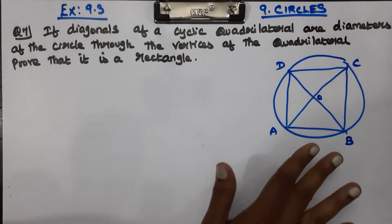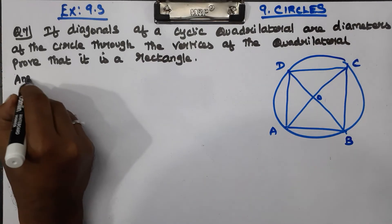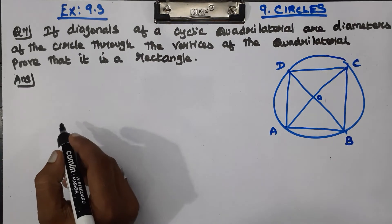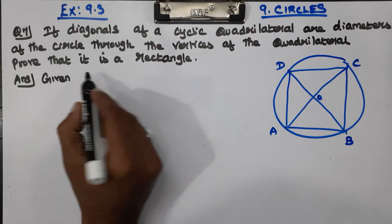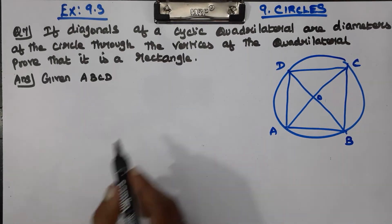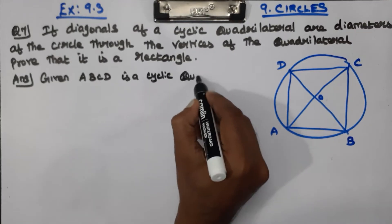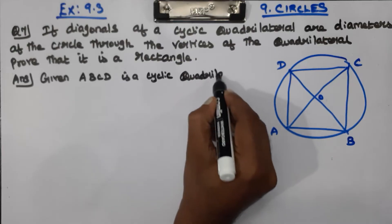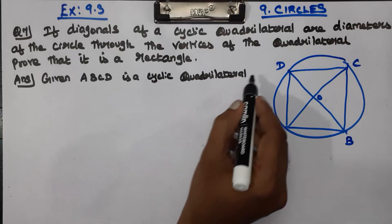Then we will open the rectangle and prove the answer. Now we can write the answer. What do we write? A, B, C, D is a cyclic quadrilateral. The most important thing to prove - the cyclic quadrilateral.